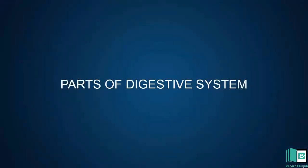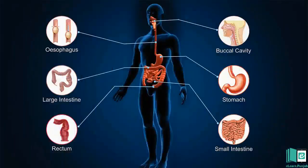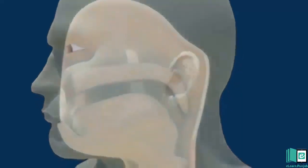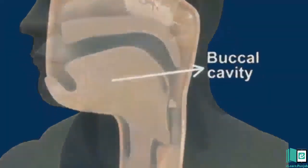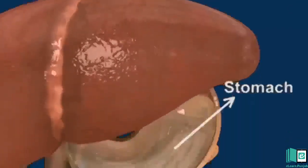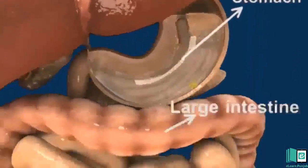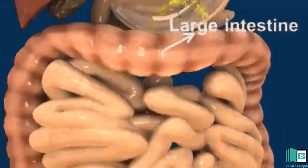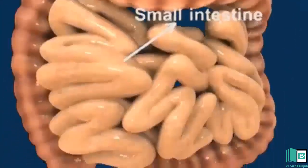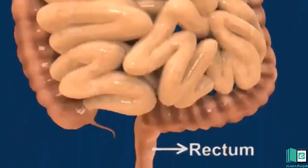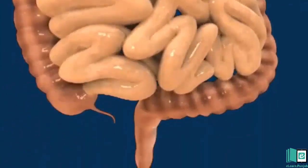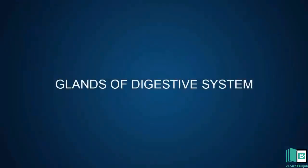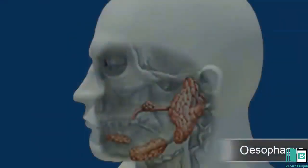Parts of the Digestive System: Buccal cavity, Esophagus, Stomach, Large intestine, Small intestine, Rectum. Glands of the Digestive System: Esophagus.